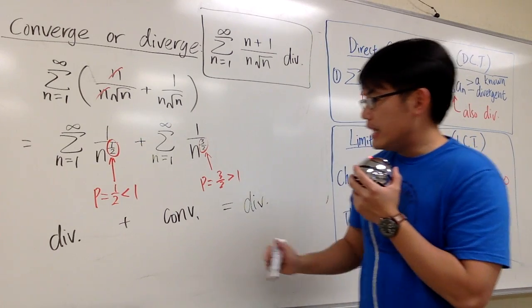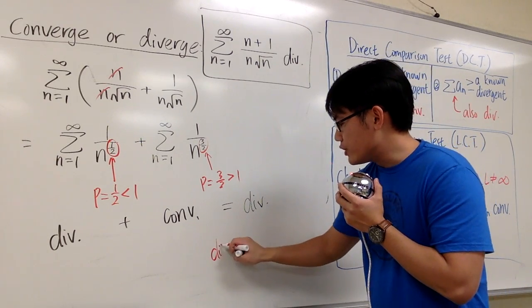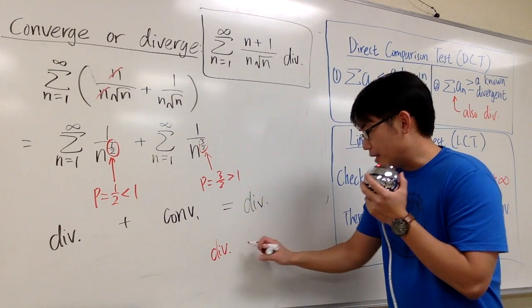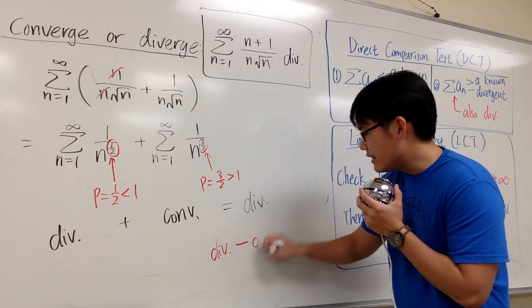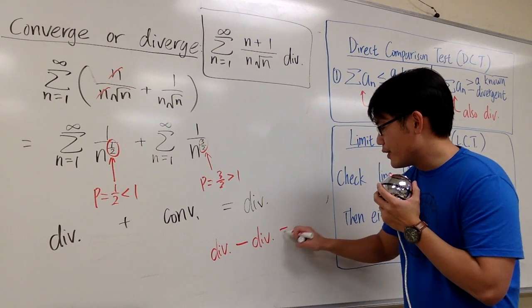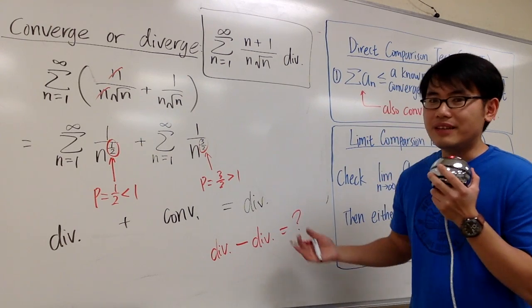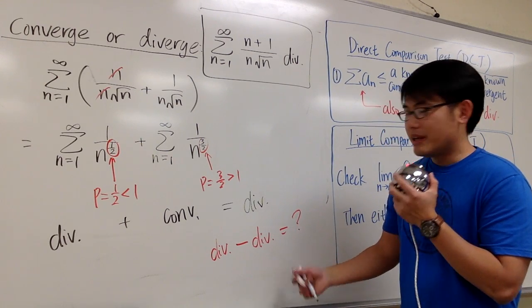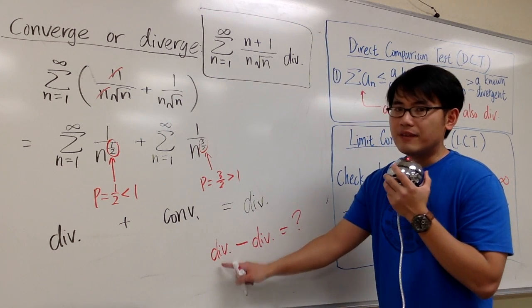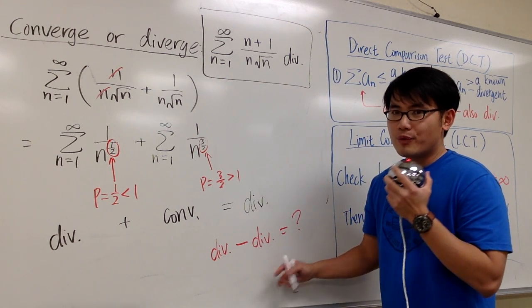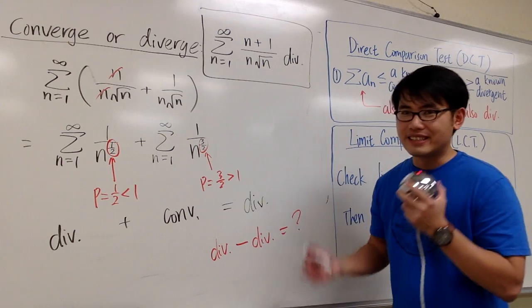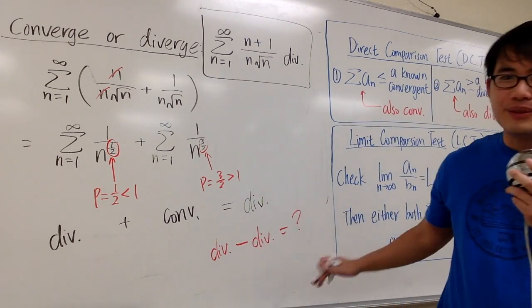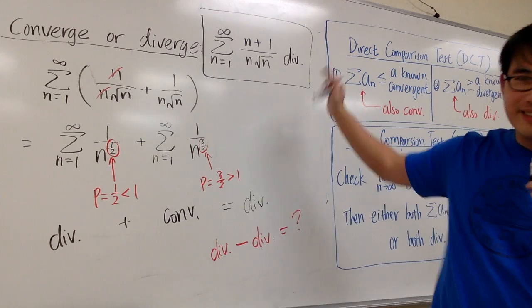But then, sometimes, if you end up with a divergent, but then you show that it's minus another divergent, this right here, we actually don't get to say if it diverges or converges. Because this is pretty much saying infinity minus infinity. What's the answer for that? The answer for that is we have to do more work. So I'll leave that to you. But the question right here, this is it.